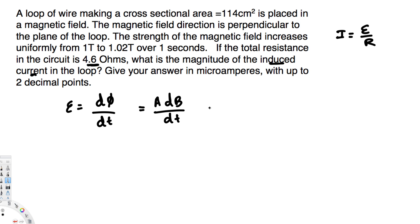This is change in magnetic field over time. Now area is provided, that is 114 centimeter square. To convert this one into meter square we have to multiply with 10 to the power of minus 4. Change in magnetic field is going to be 1.02 minus 1 tesla, divided by change in time. This is happening over one second so the time is going to be just one second.